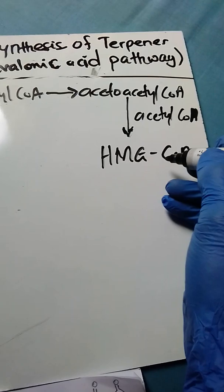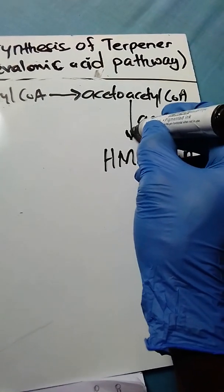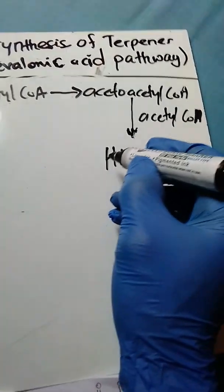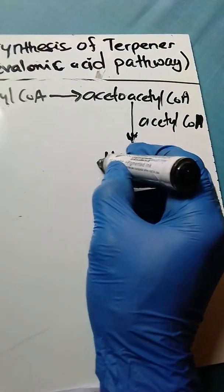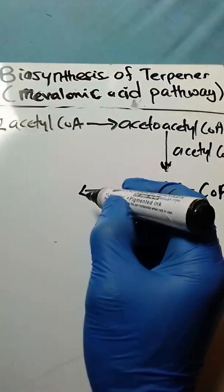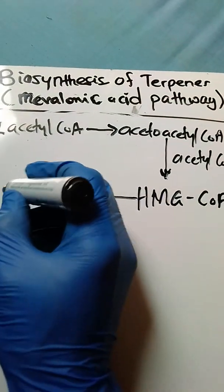The hydroxymethylglutaryl-CoA then undergoes reduction by reducing equivalents to produce mevalonic acid.